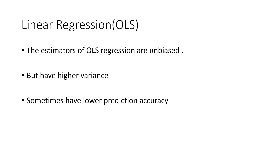By minimizing this objective function we will obtain the OLS regression model estimators. These estimators will be unbiased, but they have high variance. Because of this high variability, sometimes it will affect the prediction accuracy — the overall prediction accuracy of the model will go down. So if we have that kind of situation, then we can use penalized regression.